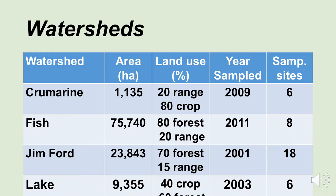Then we had Lake Creek — 9,300 hectares, up off of Lake Coeur d'Alene in Kootenai and Benewah County. It is 40% cropland and 60% forest land. It was sampled in 2003 and there were six sampling sites.